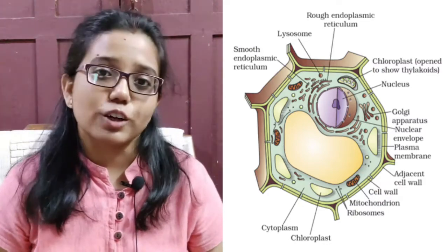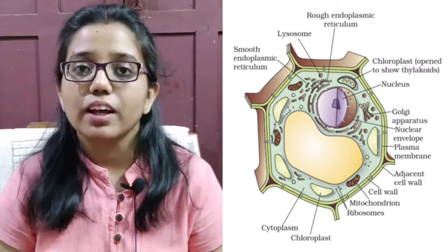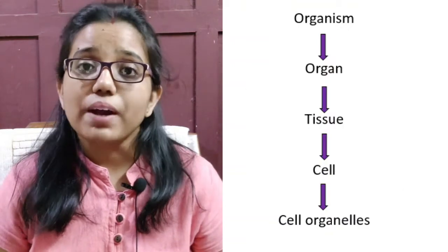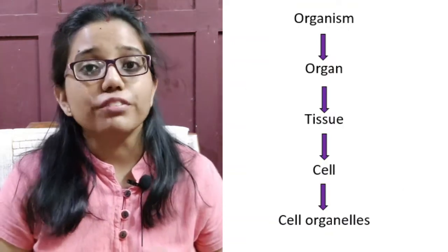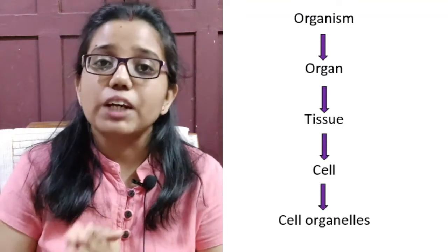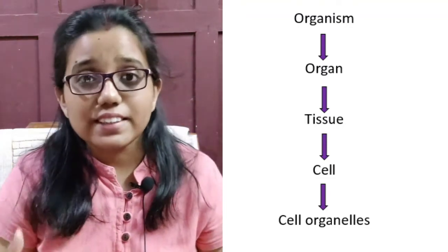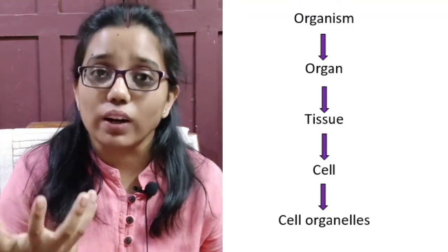And these components are called cell organelles. So, an organism has organs in body and an organ is composed of tissues. Tissues are made up of cells and within a cell, we find the cell organelles.